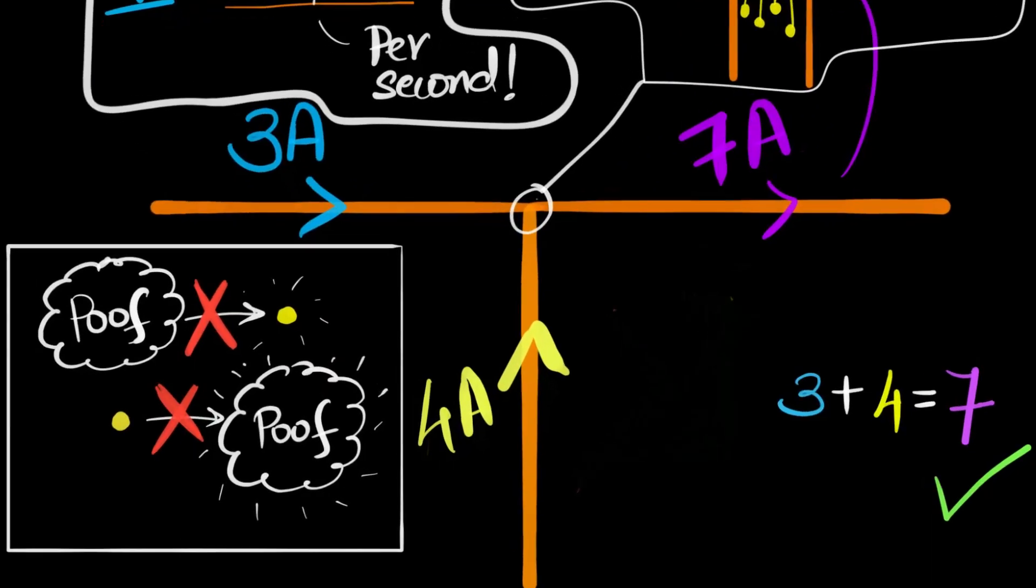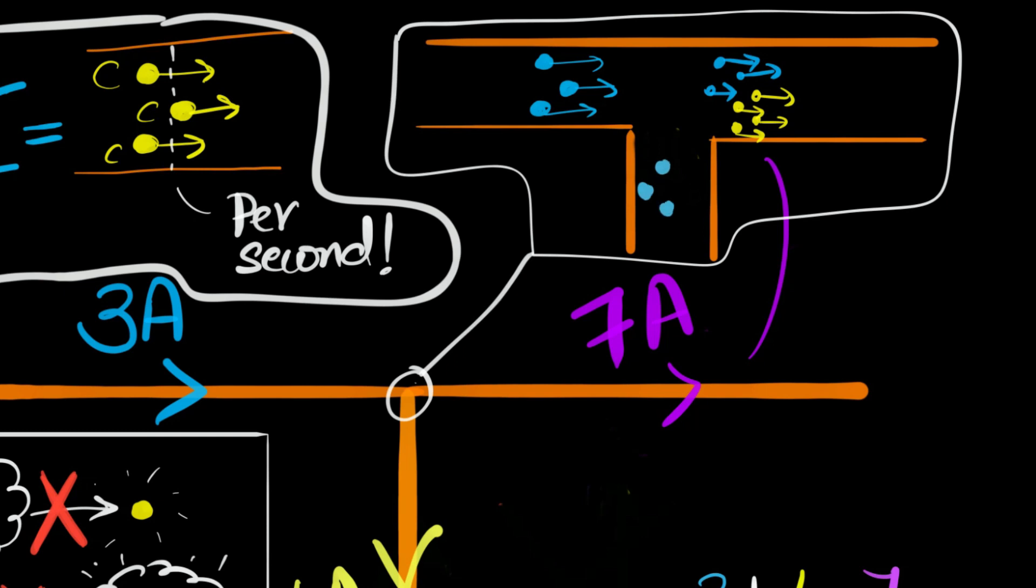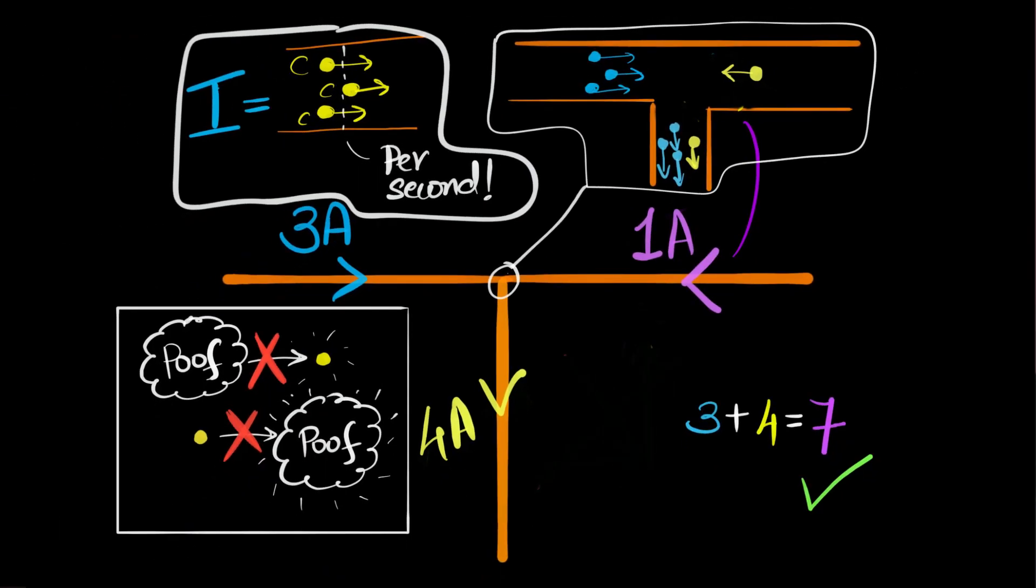But you might say, wait a second, Mahesh, not so fast. Current must be having direction, because when you're adding them up, direction matters. In this example, what if, instead of the four amperes flowing upwards, the four ampere was flowing down. Now, the total current over here changes. It's no longer seven. It's now one ampere to the left. So clearly, while adding up currents, direction matters. So current must be having a direction, right?